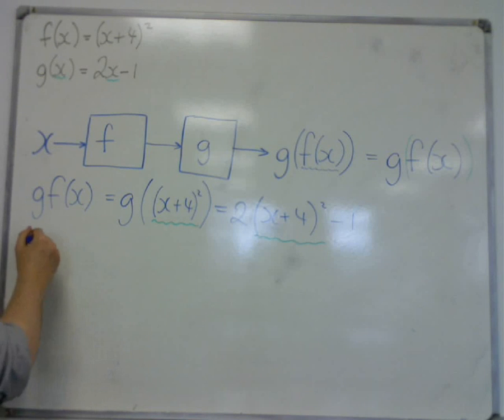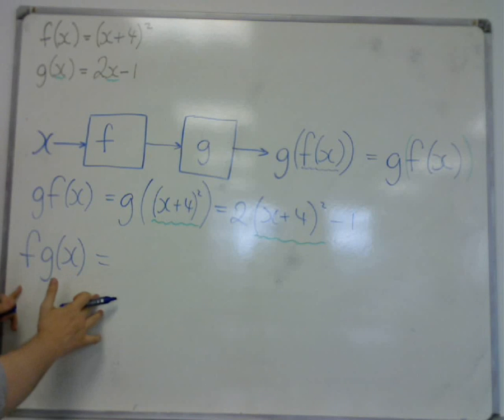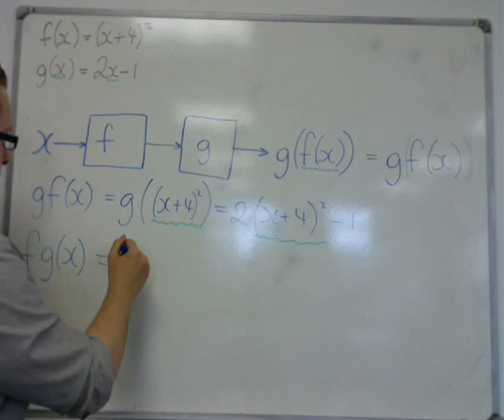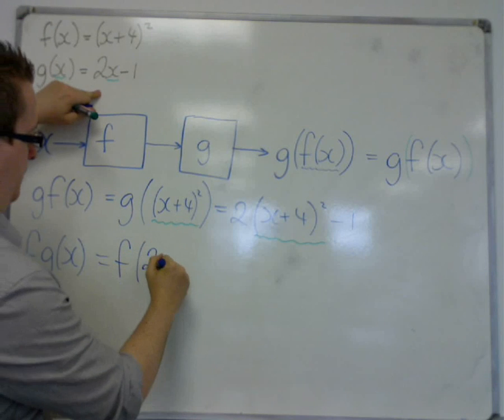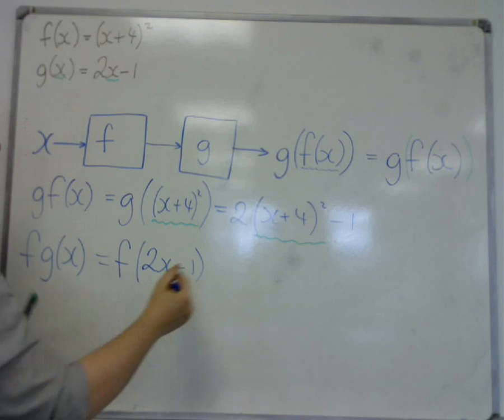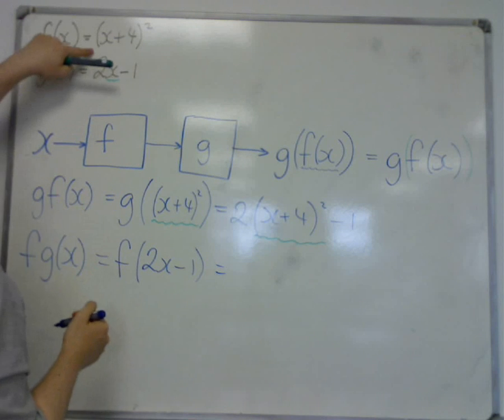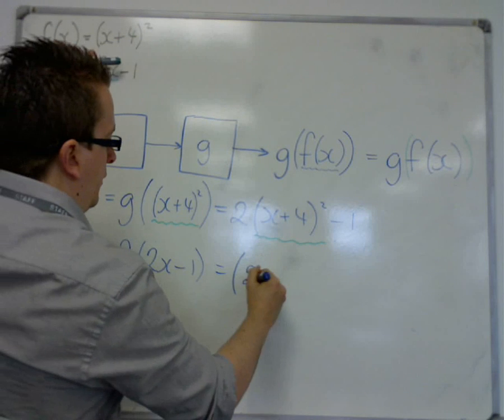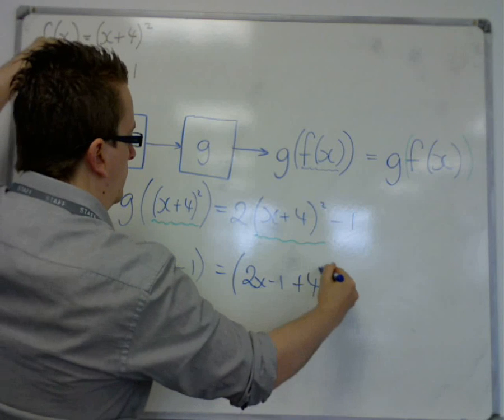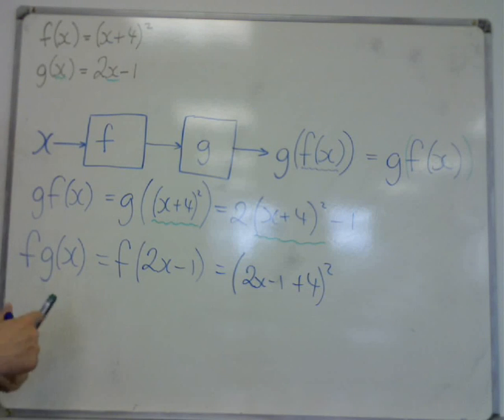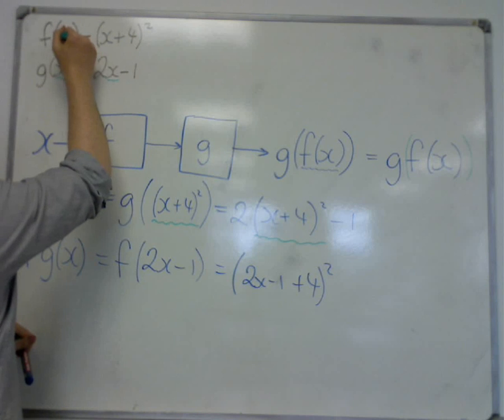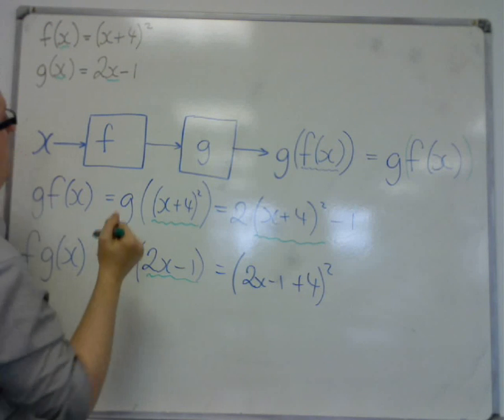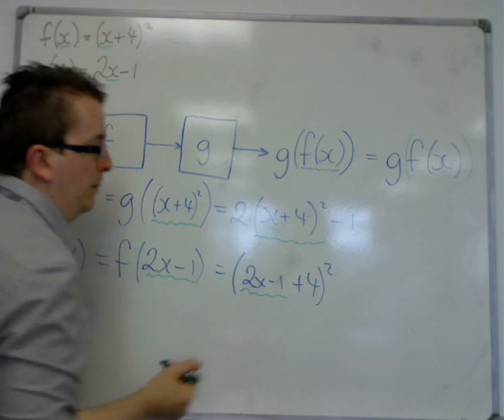We could also be asked f of g of x, because this is not necessarily the same thing. This is applying g first and then applying f. So this is f of g of x, which is 2x minus 1. Now, f is x plus 4 squared, so the x has been replaced with 2x minus 1. So this is 2x minus 1 plus 4 all squared. The x here has been replaced with 2x minus 1.